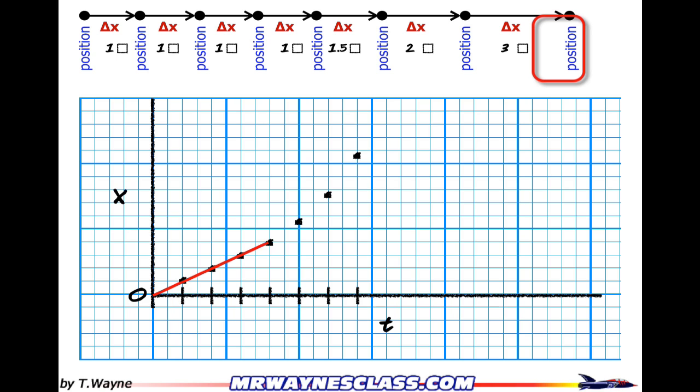So since these delta x's don't change, that means the velocity doesn't change, so I get a straight line. Wherever there's a constant velocity, I get a straight line on my x versus t graph.